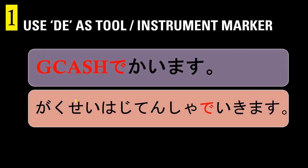Next: 'Gakusei wa jitensha de ikimasu' — the student goes somewhere by bicycle. The point here is that the bicycle is the vehicle and it is the means or instrument. The difference from GCash is the verb itself. 'Kaimasu' is not a movement verb — it doesn't imply physical movement. 'Ikimasu' is a movement verb, implying the subject is moving or traveling. So we assume 'jitensha de' is the vehicle because logically, that is a bicycle.